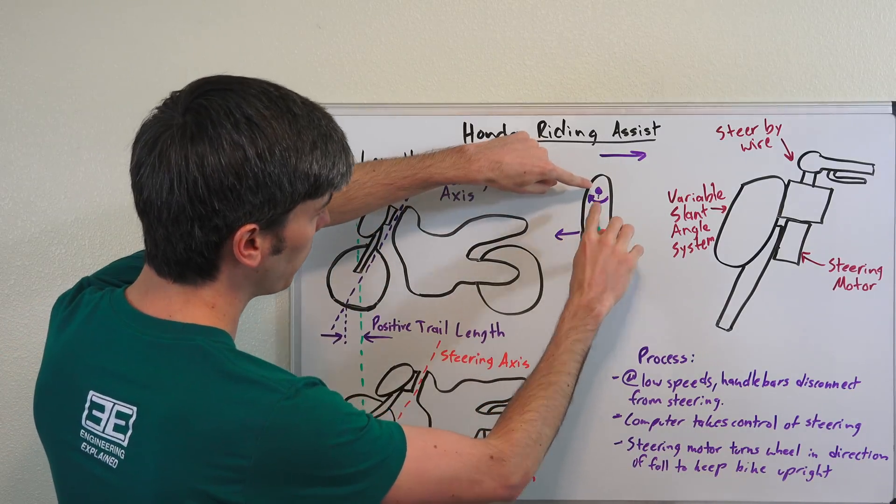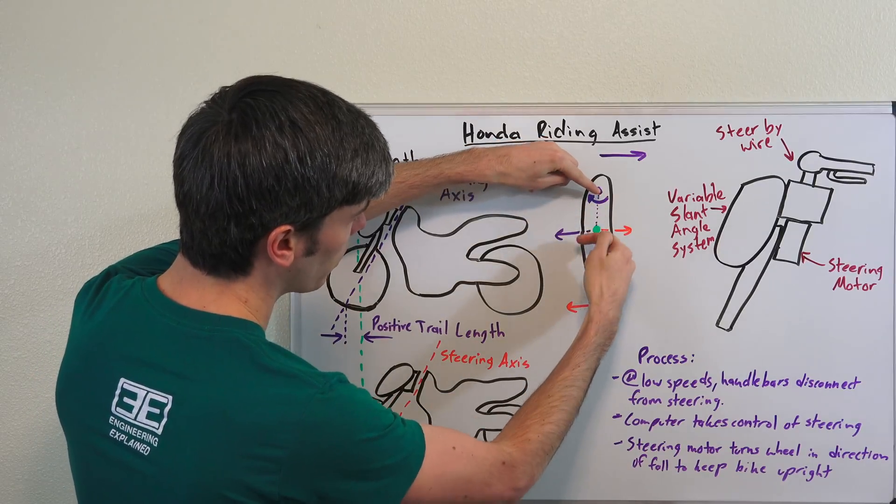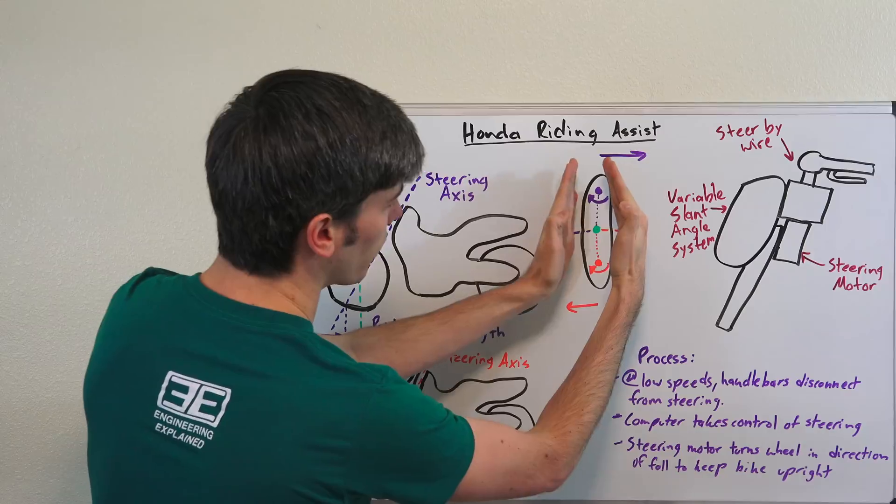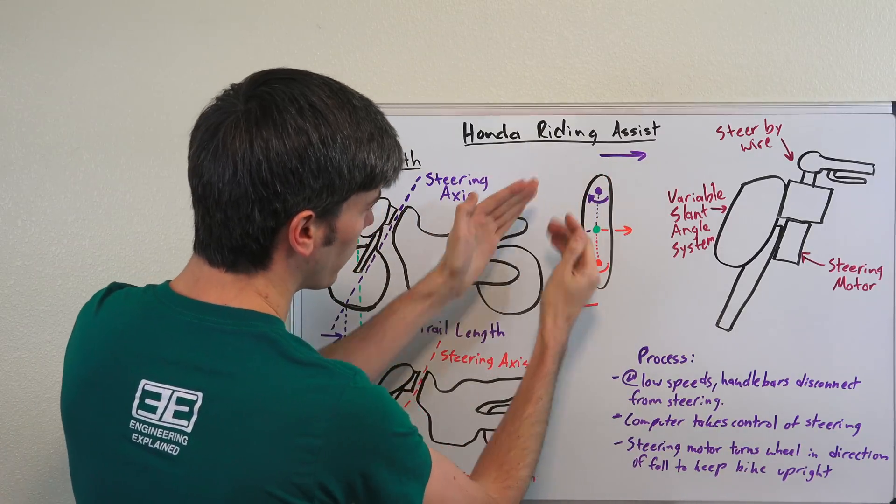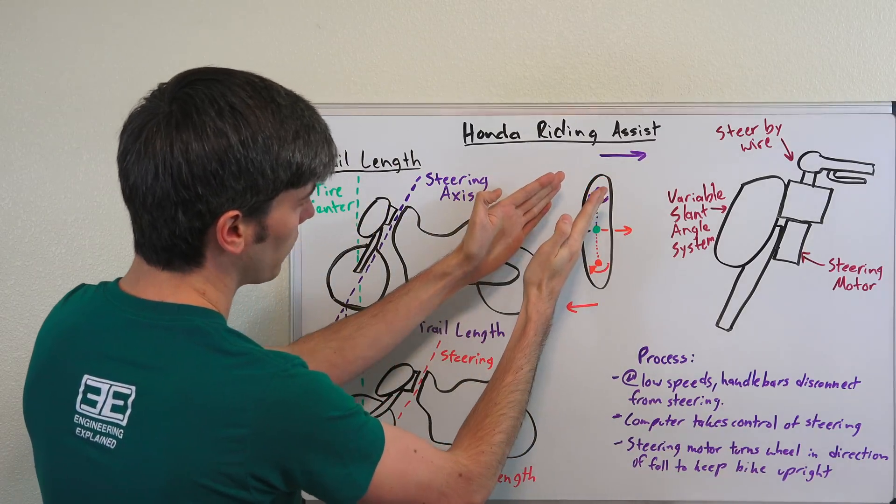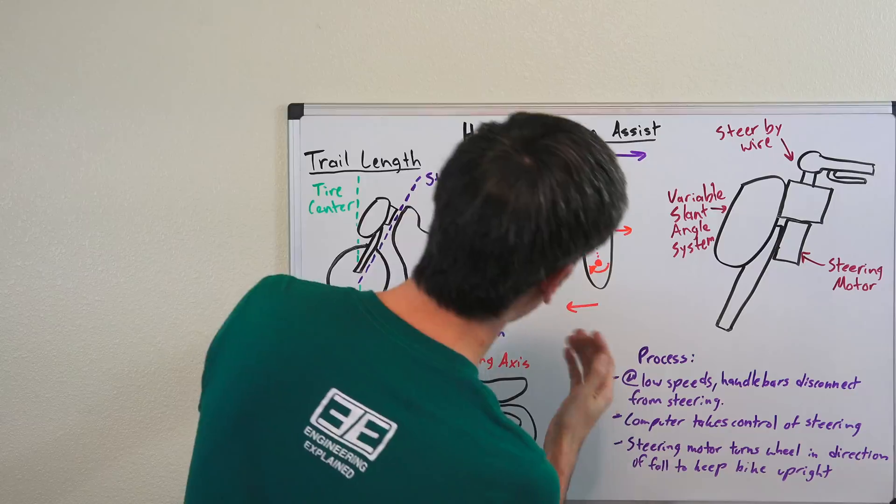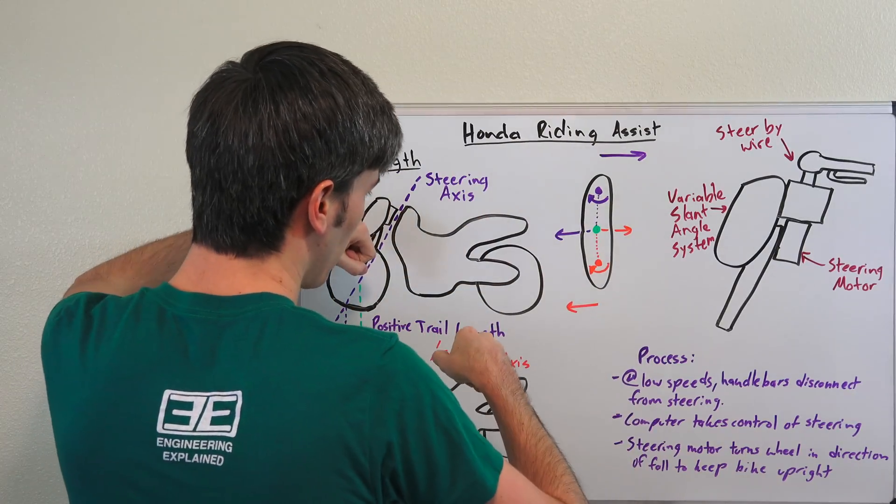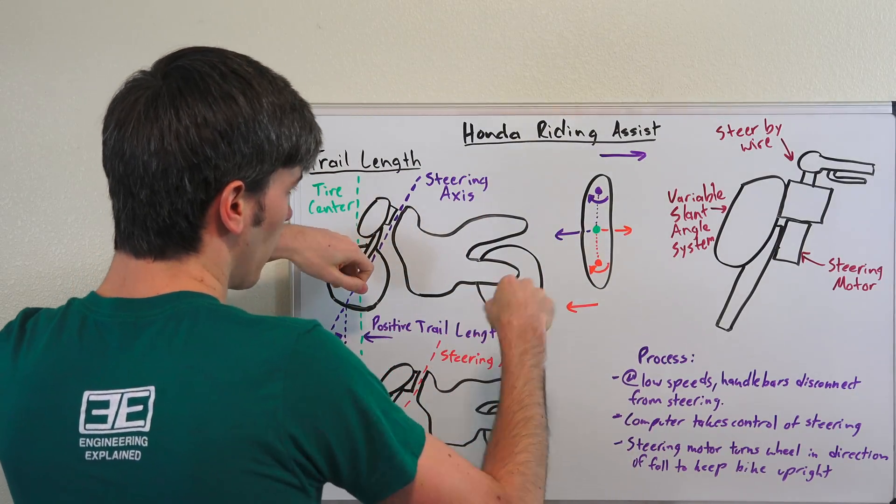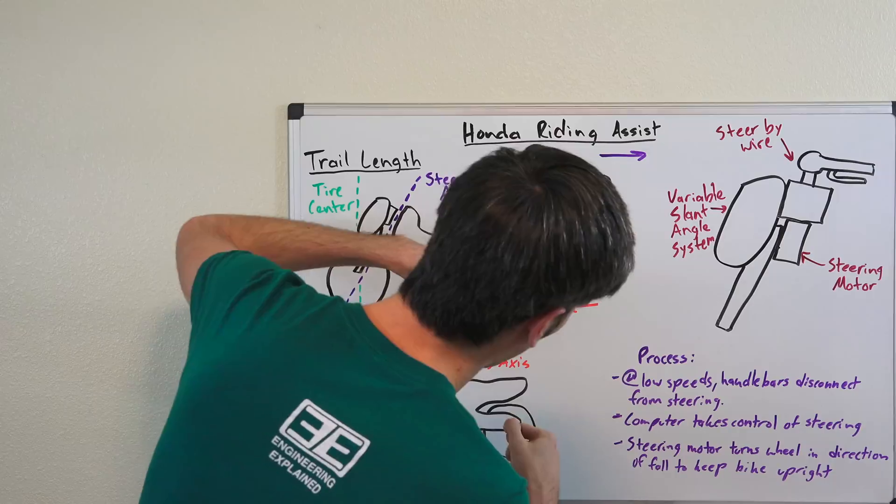There's our center point that's actually touching the ground. With positive trail length, your pivot point is up here. If you pivot up here, it's going to push that center, the whole tire, in this direction. If you're pushing the tire out that direction, it's going to make your bike fall over that way. You turn the bike in, it pushes the tire that direction, and you fall over.